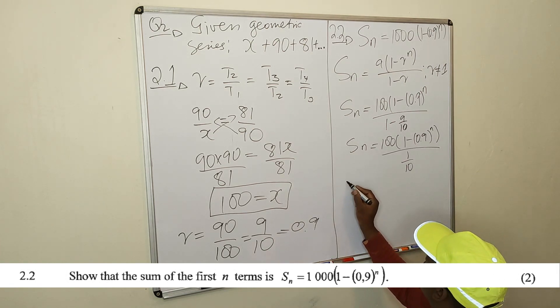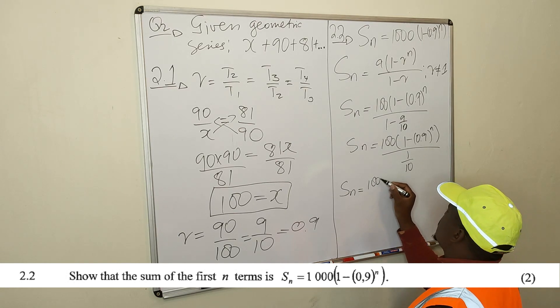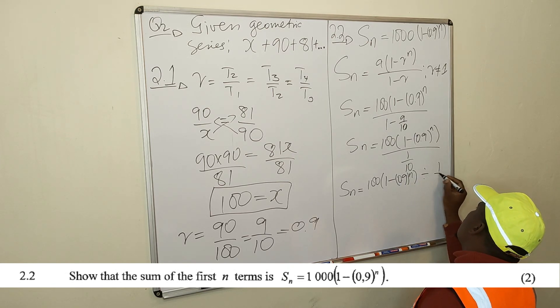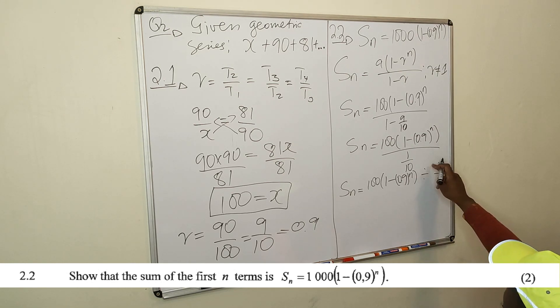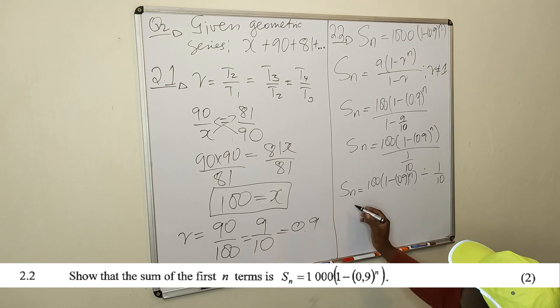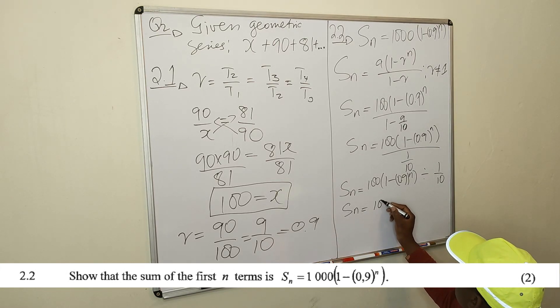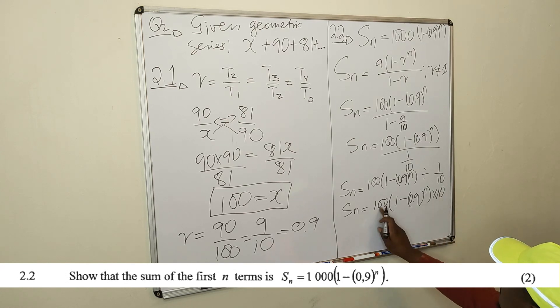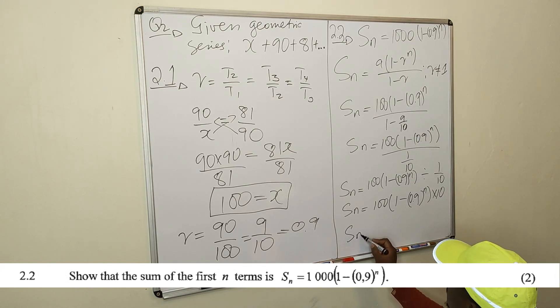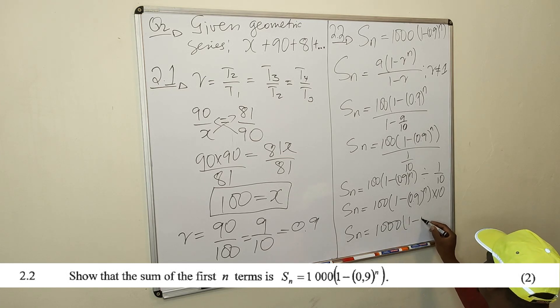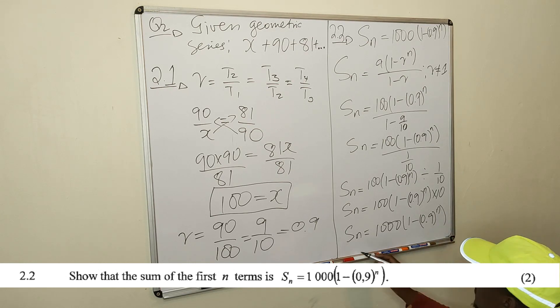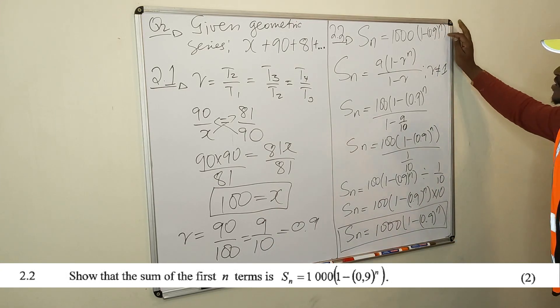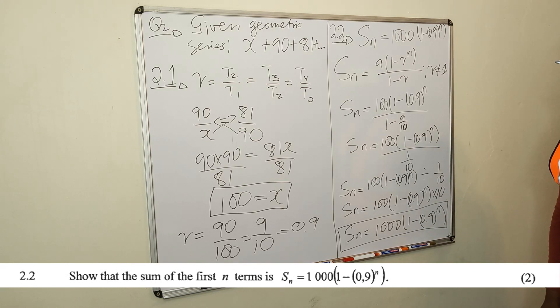So we have a situation of S_n is equal to 100 times 1 minus 0.9 raise n divided by 1 over 10. You can change that to a multiplication sign. So we have S_n is equal to 100 times 1 minus 0.9 raise n times 10. So the 10 multiplies that. We have S_n is equal to 100 times 10, which is 1000 times 1 minus 0.9 raise n. And you have shown that the sum of the first n terms of this geometric series is this one.